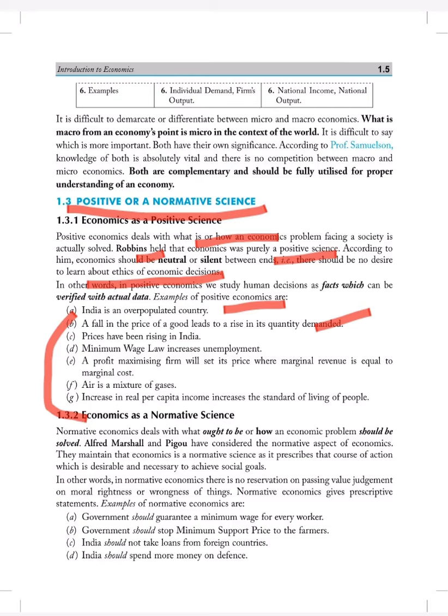If the price of any commodity will decrease, the demand of that particular quantity will increase. Suppose a chocolate which costs Rs. 50, now its cost is Rs. 30, its demand will automatically increase. Prices have been rising in India. Minimum wage increase unemployment. A profit maximizing firm will set its price where marginal revenue is equal to the marginal cost. Quite simple, a firm will discuss their price according to their supply and revenue and cost.